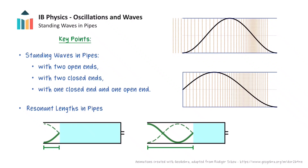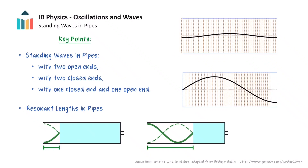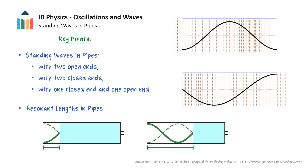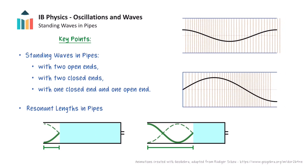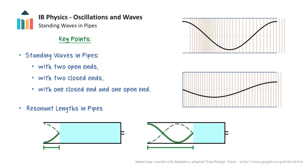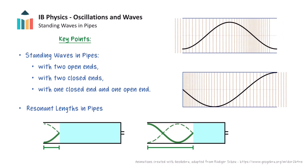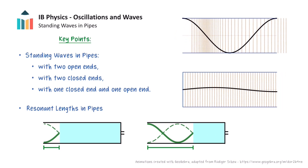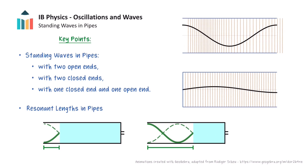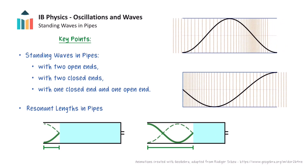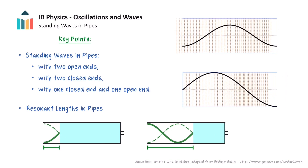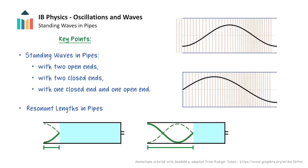This video will explore the formation of standing waves in pipes. The different standing wave patterns that can exist in pipes under three different boundary conditions will be examined: namely pipes with two open ends, two closed ends, and one closed and one open end. We will then discuss the concept of resonant lengths in pipes for a given frequency of sound.